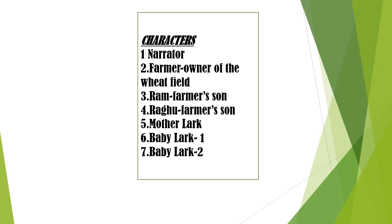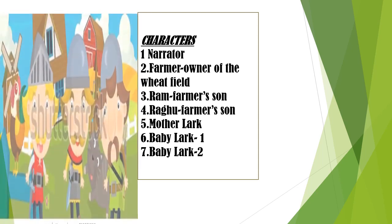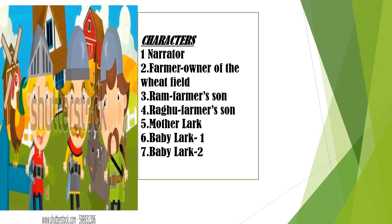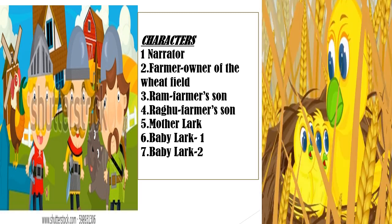Now let's see the characters of the story. Number 1 is the narrator — the person who is telling the story. Here I am the narrator. Second is the farmer, owner of the wheat field. Third is Ram, farmer's son. Fourth is Ragu, farmer's son. Fifth is mother lark. Sixth and seventh are baby lark 1 and baby lark 2.